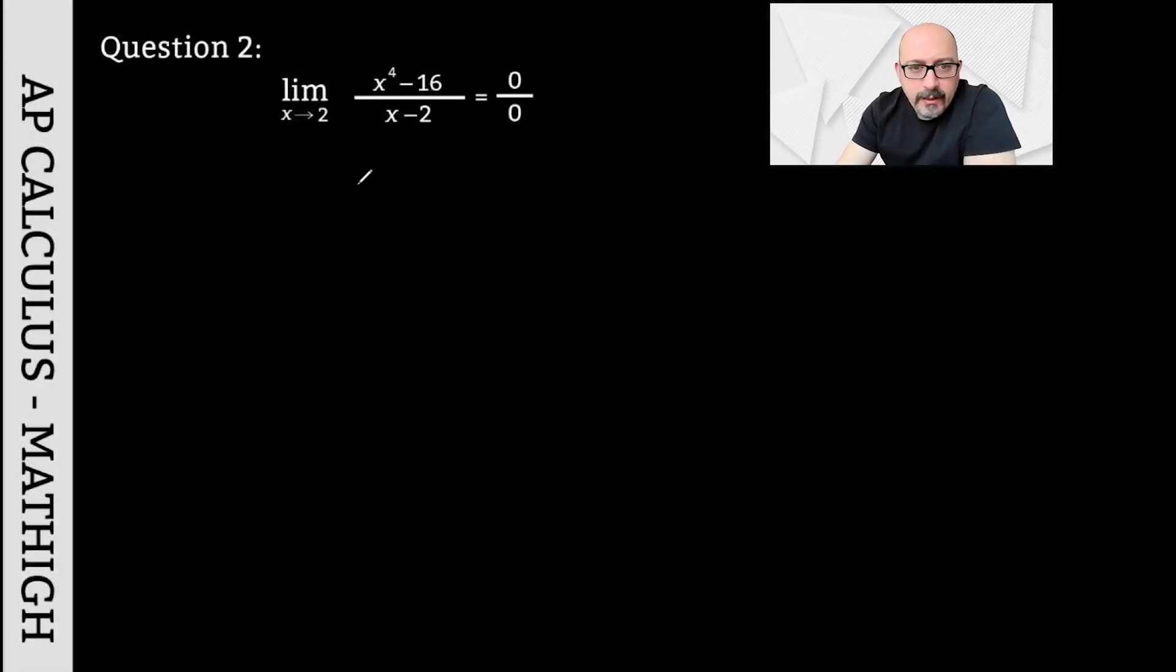The second question involves the expression x to the fourth minus 16, over x squared minus 4, as x approaches 2. When you substitute 2 for x, you get 16 minus 16, which is 0. And below that, 2 squared minus 4 gives 0. Here I will do some factoring.